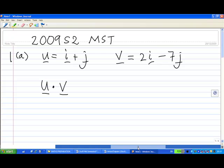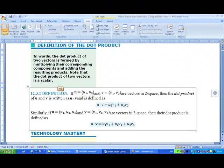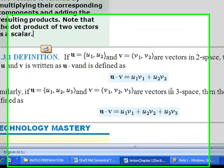Alright, so the first part, we are going to find out what is u dot v. Now, in this case, it may refer to the Anton chapter 12 section 3 says that if you have two vectors, say u1, u2 and v1, v2, then the dot product of u and v is u1v1 plus u2v2. Same thing for if there are vectors with three components.